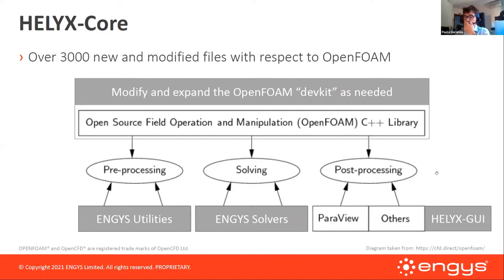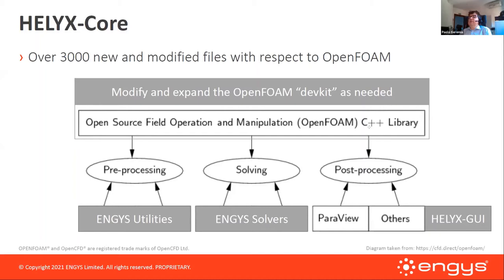Helix Core features more than 3000 modified files with respect to the standard version of OpenFOAM. OpenFOAM, of course, has tools for pre-processing, solving, and post-processing all based on the same open source library. What we did was modify the base OpenFOAM repository — we have our own fork called Helix Core — and we coupled the main solvers with a set of specific utilities for pre-processing and post-processing.